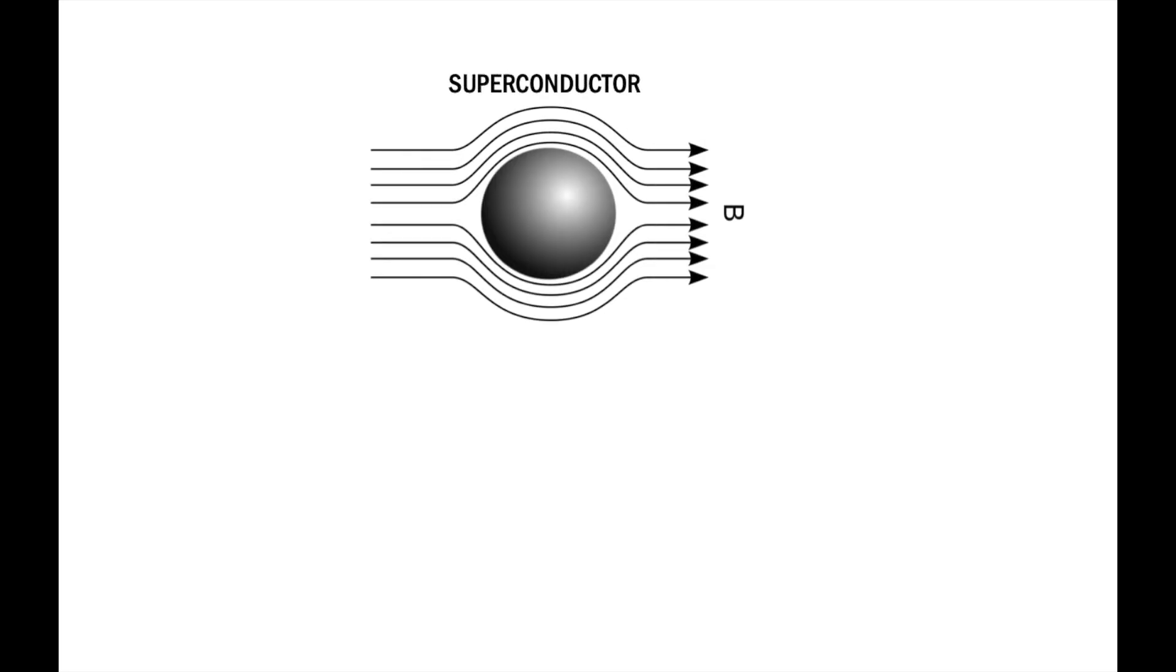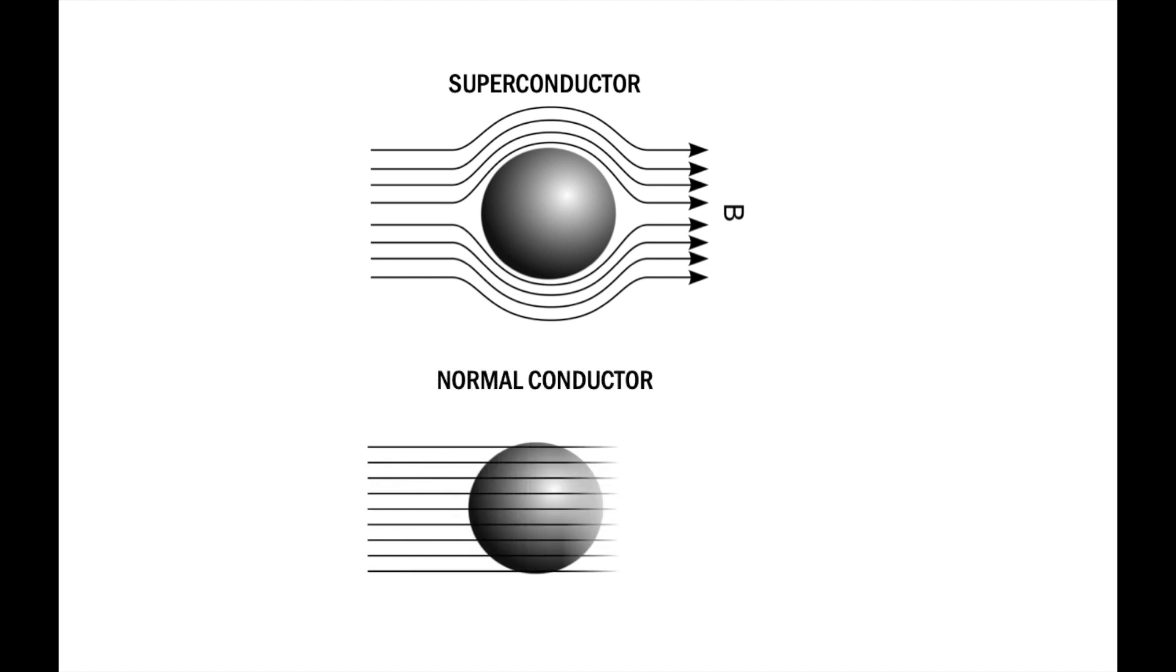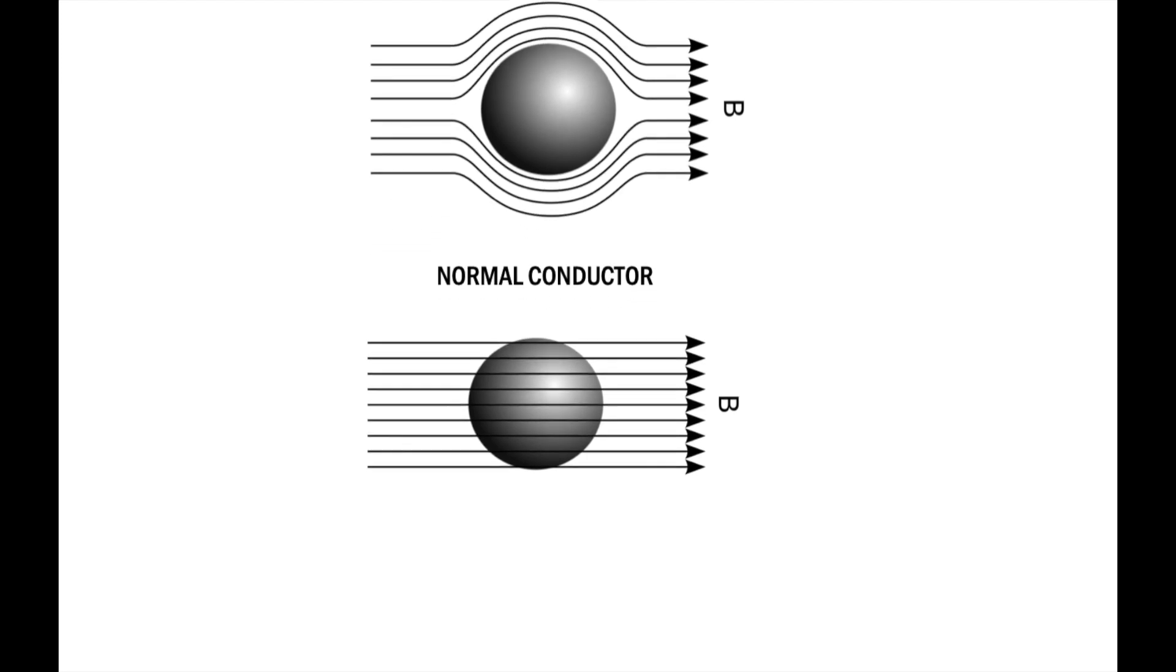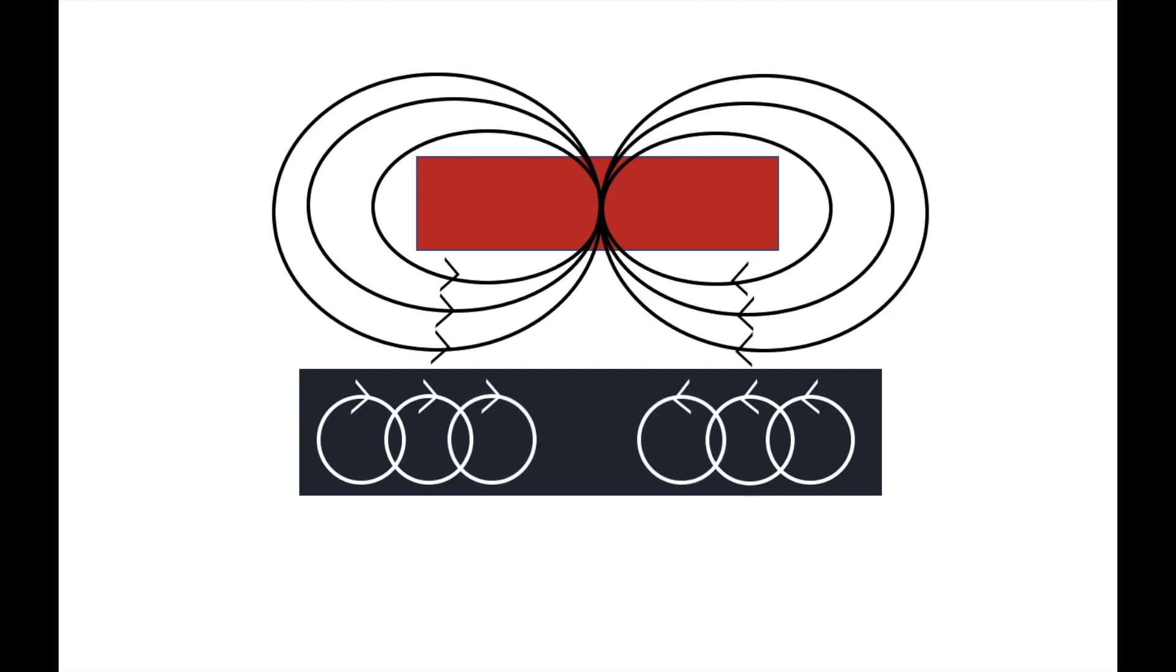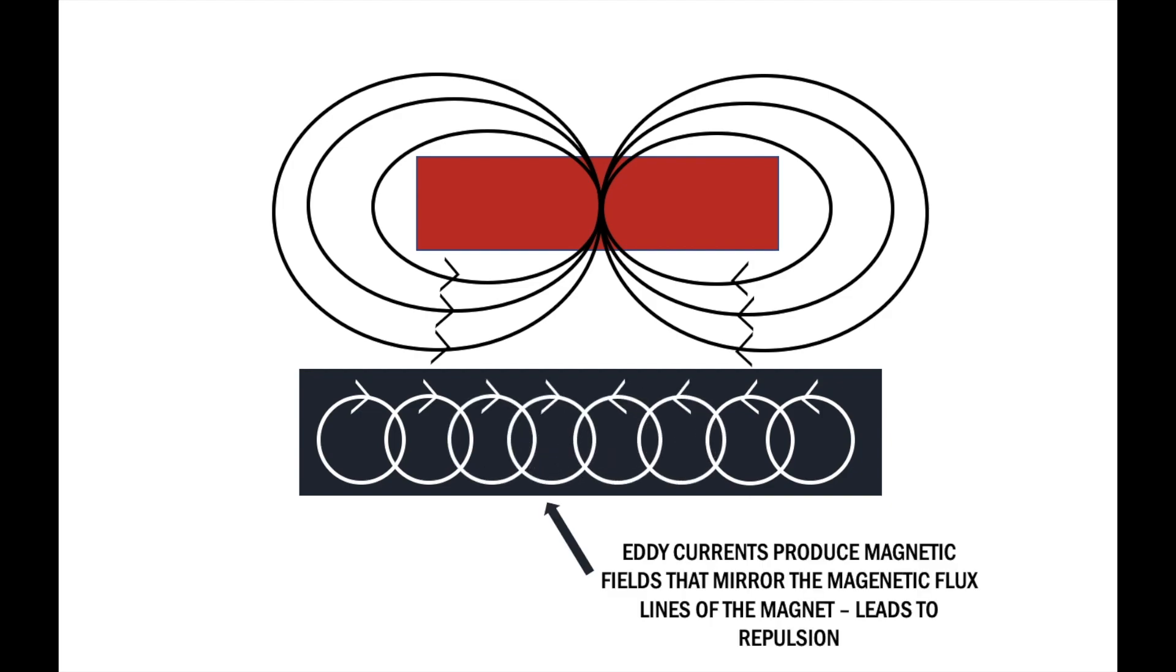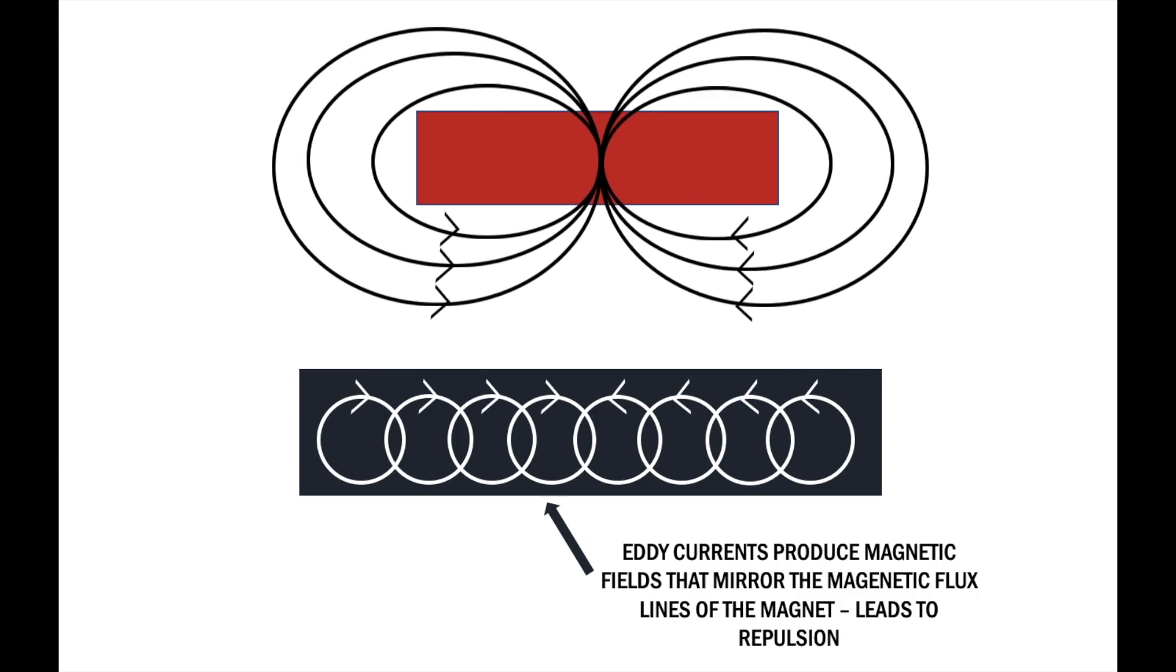One significant property of superconductors is that when they are making the transition from normal to superconducting state, they expel magnetic fields from their interiors, whereas a normal conductor lets magnetic field lines pass through. When a magnet is brought near a superconductor, electrons flow in the superconductor, producing eddy currents, which produce magnetic fields that mirror the magnetic field outside the superconductor. This causes all field lines in the superconductor to cancel out and repels the magnet upwards.